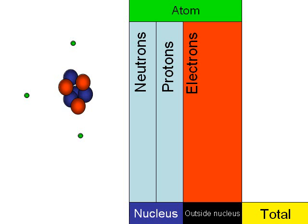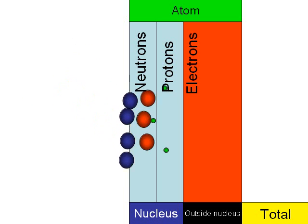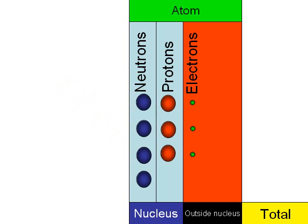If we take an atom, we can break it into its different parts. Here we can see that the components inside the nucleus are the neutrons and protons, and then surrounding it are electrons. For a neutral atom, the number of electrons is exactly the same as the number of protons.